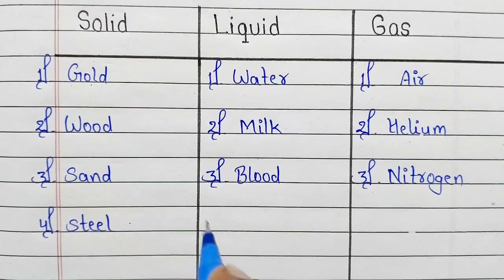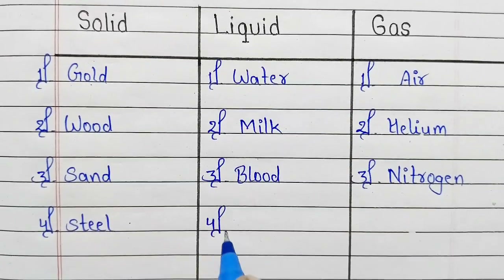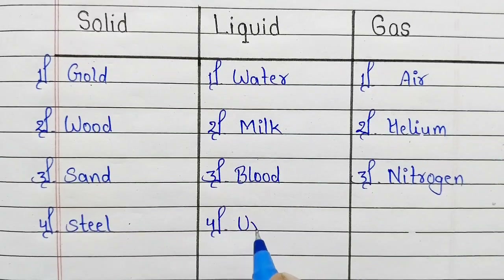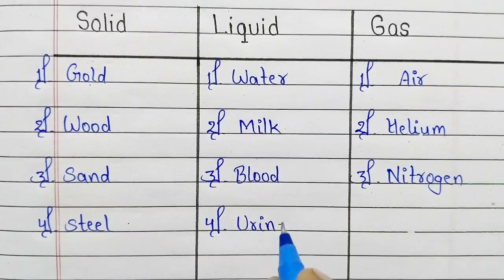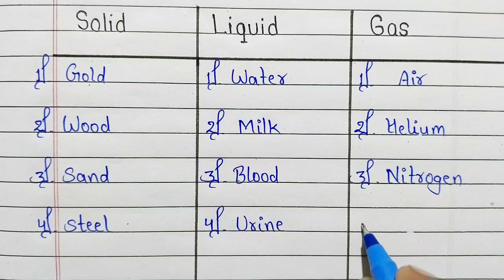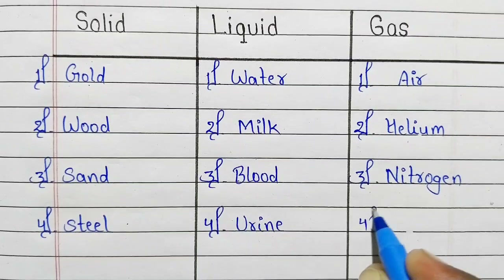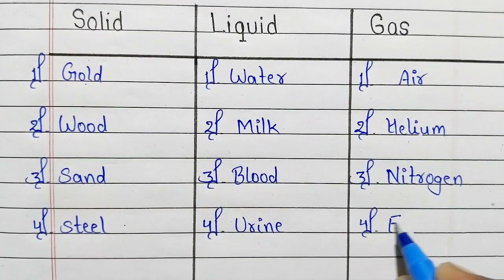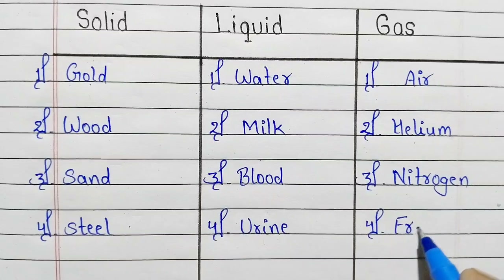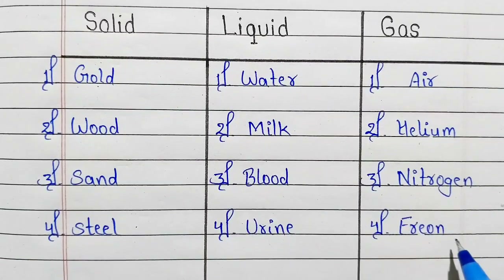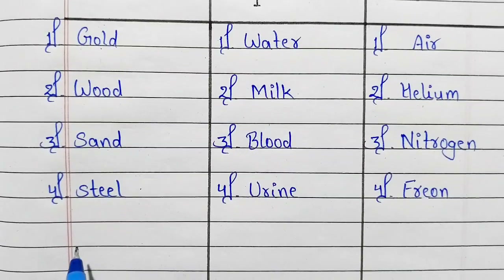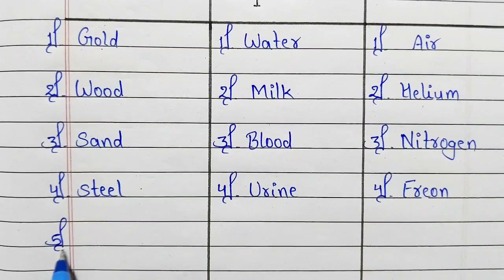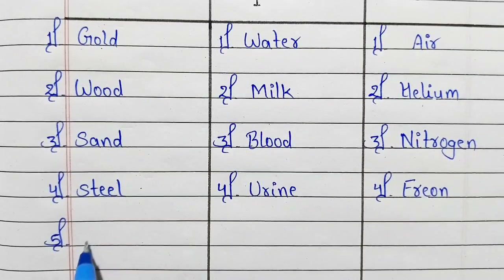Fourth number: solid — steel. Fourth number: liquid — urine. Fourth number: gas — fiber.